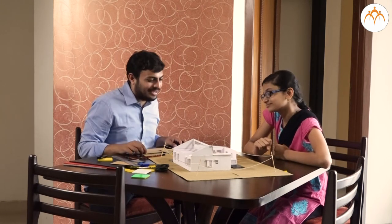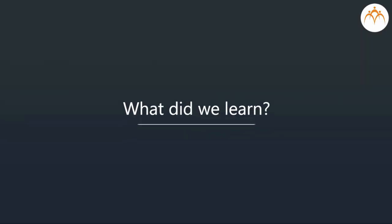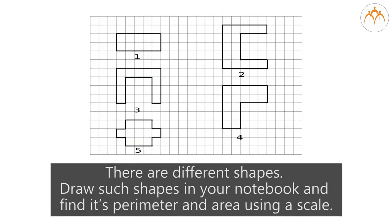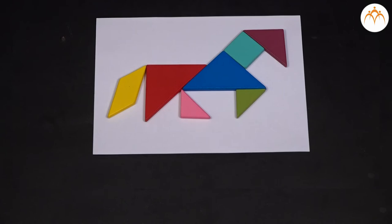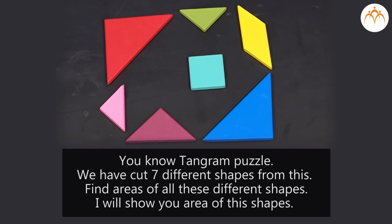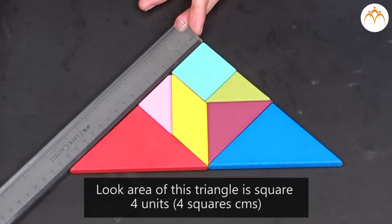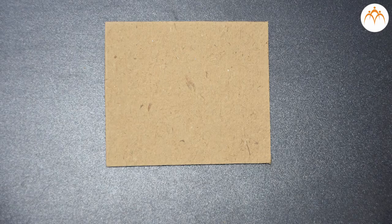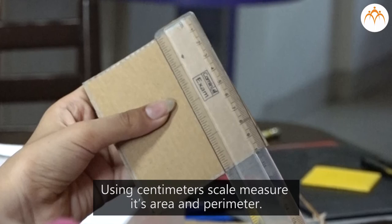Now I think we will stop here — I am really very hungry. Should we have lunch? Yes, Dada! Then we will do this afterwards. What did we learn? Area of a square plane is measured in square centimetres or square metres. Do this activity: draw different shapes in your notebook and find their perimeter and area using a scale. You know the tangram puzzle — we have 7 different shapes from this. Find the areas of all these different shapes. Area of this triangle is 4 square units. We can make a square using all 7 pieces — make that square and measure its area and perimeter using a centimetre scale.